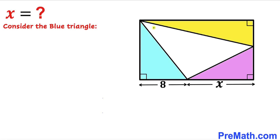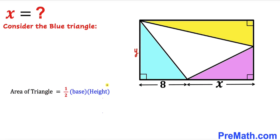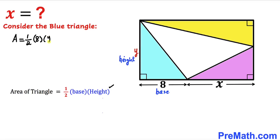Let's go ahead and label the side length of this rectangle. I'm going to call this side y units, and this side length is the same as the side length of this blue triangle as well. Now let's recall the area of a triangle formula: area equals one-half times base times height. For this blue triangle, 8 is the base and y is the height, so the area of this blue triangle is A = (1/2) × 8 × y, which turns out to be 4y.